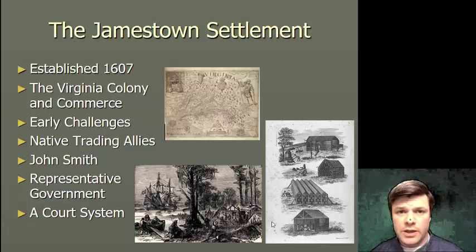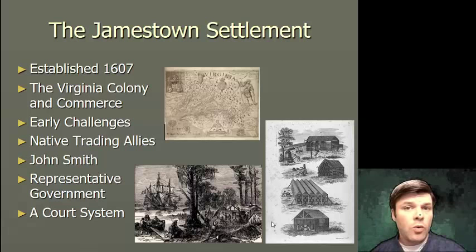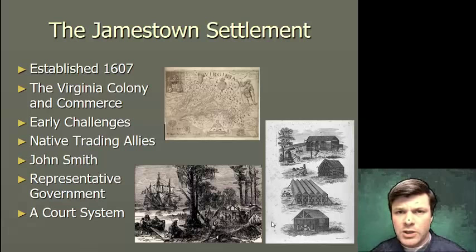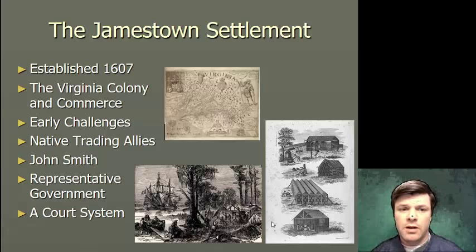In short order, Jamestown doesn't start out any better than Roanoke did — it came very close to going down the same road as another lost colony. The reason is pretty simple: what these people coming over expected to find was treasure, like the Spanish were finding. If you think about Virginia, you don't really associate it with gold or fur trading, and so they didn't find any treasure. Those first few winters were very difficult until they get a military man in there by the name of John Smith.